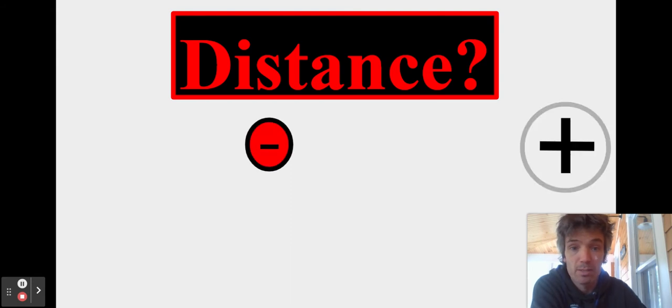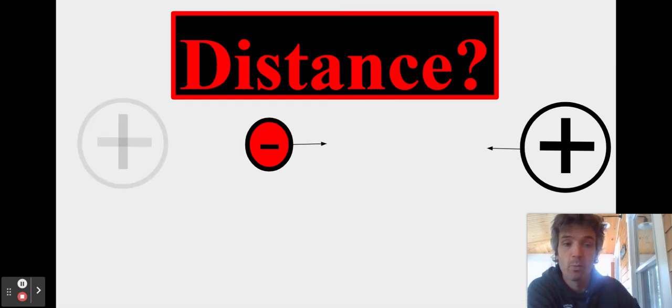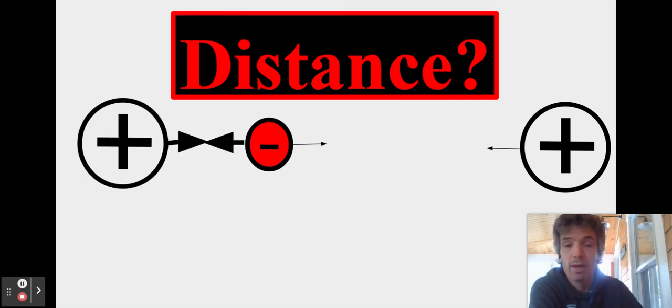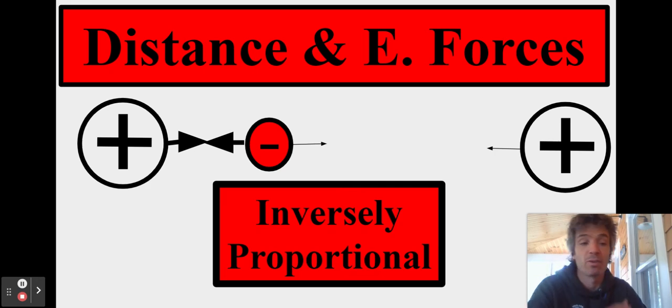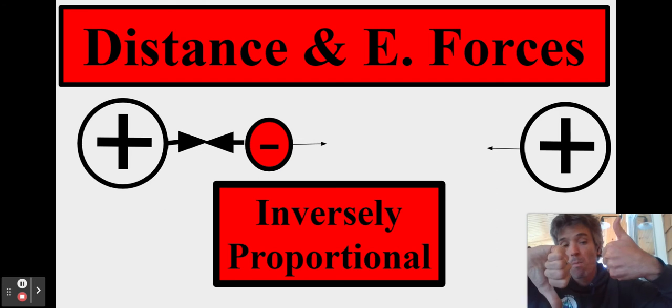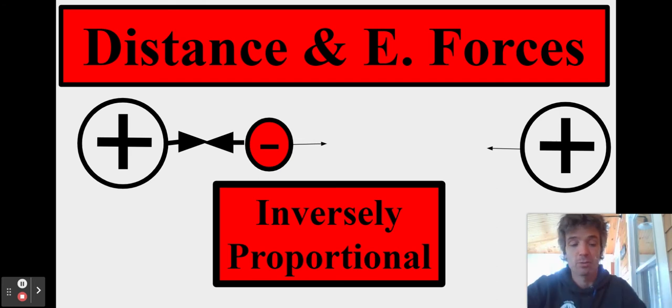Now, what's the relationship with distance? As you can see, once again, there's going to be attractive force. Well, what if I bring it closer? Then that attractive force is going to increase. All right, so this is going to be inversely. The distance is going down and the electric force is going up. All right, so that's like an opposite trend.